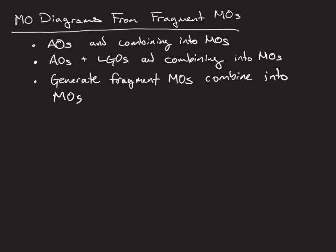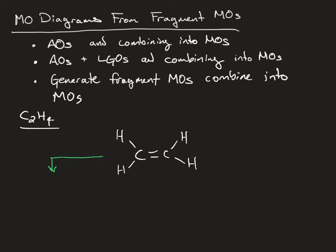The molecule we're going to be generating a molecular orbital diagram for is ethene. We're going to consider the molecule and break it down into symmetry-related fragments. One way might involve taking the CC double-bonded portion and constructing MOs from atomic orbitals of carbon and combining these with SALCs generated from the four hydrogen 1s orbitals in D2H symmetry.